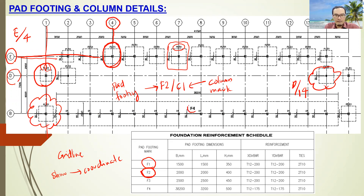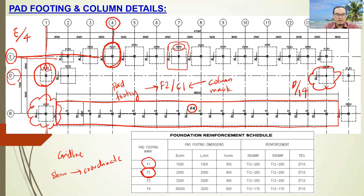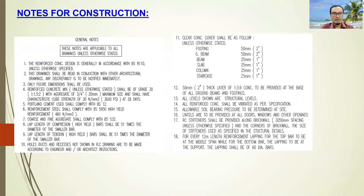How about F4? F4 is here — you can see that the dimension is very large. This is a combined footing where all columns at grid line B2, B3, B4 up to B14 will rest on one large pad footing. In the same drawing, you can also usually find details of construction or materials, such as the characteristic cube strength of the concrete.